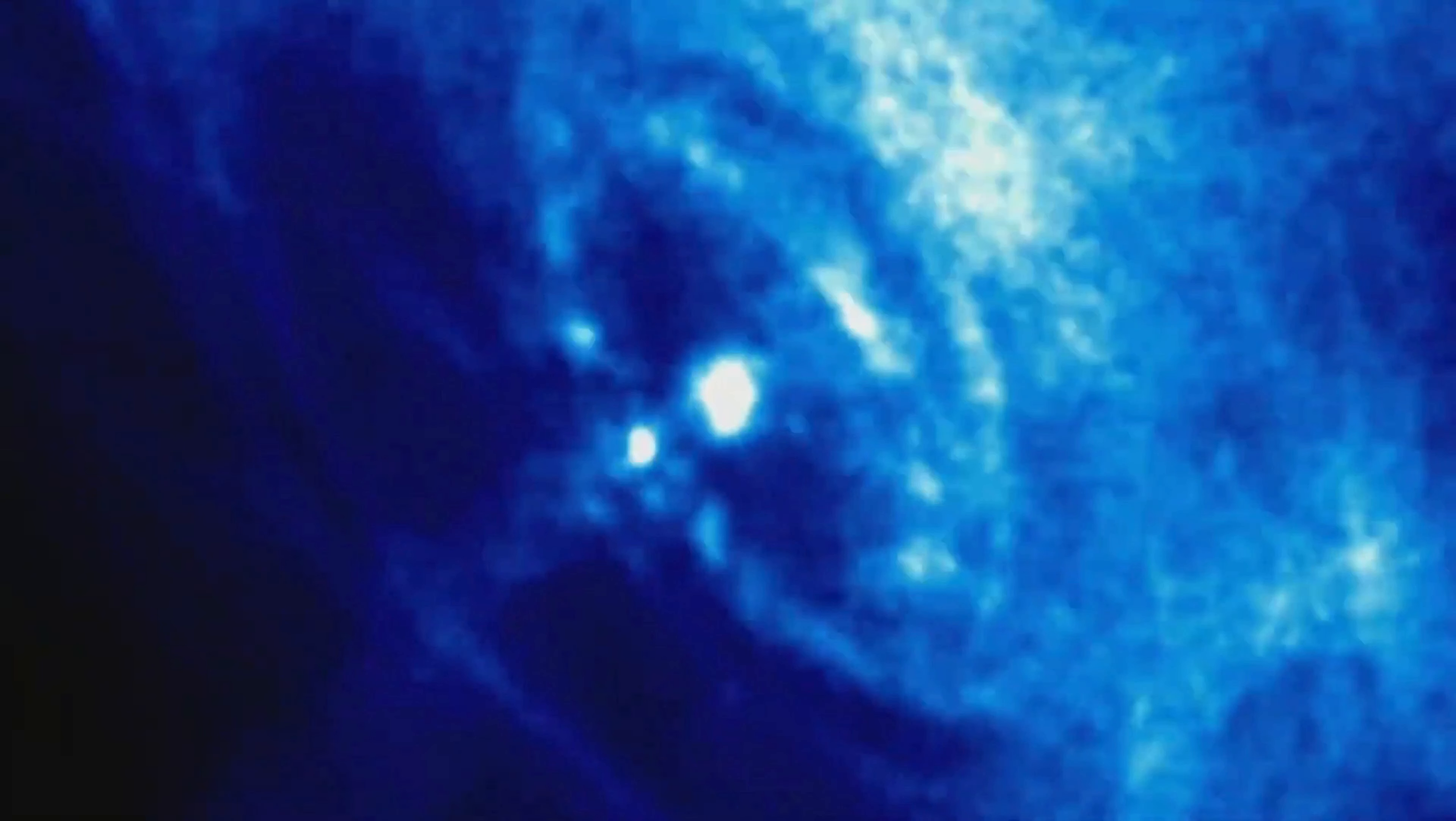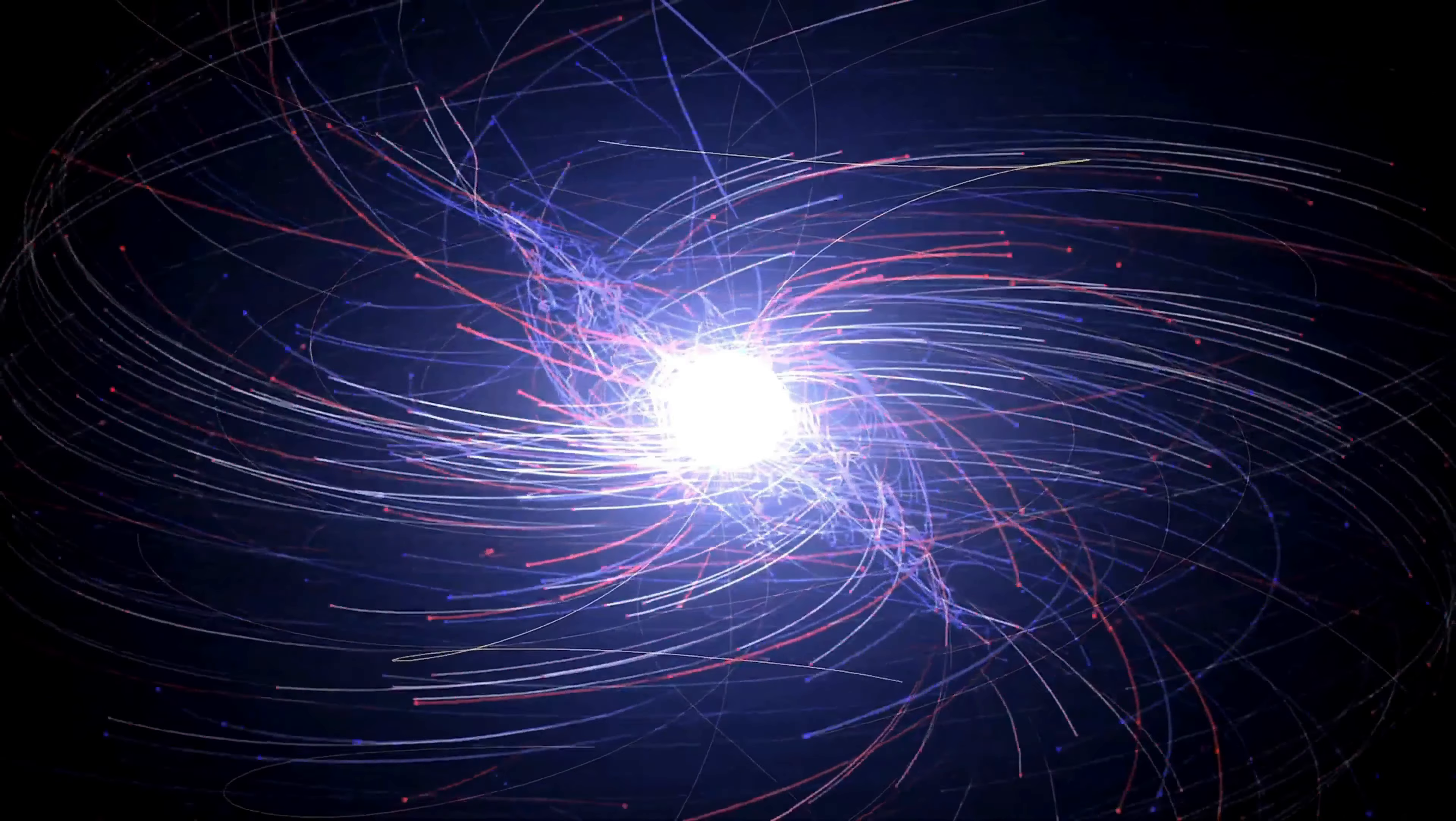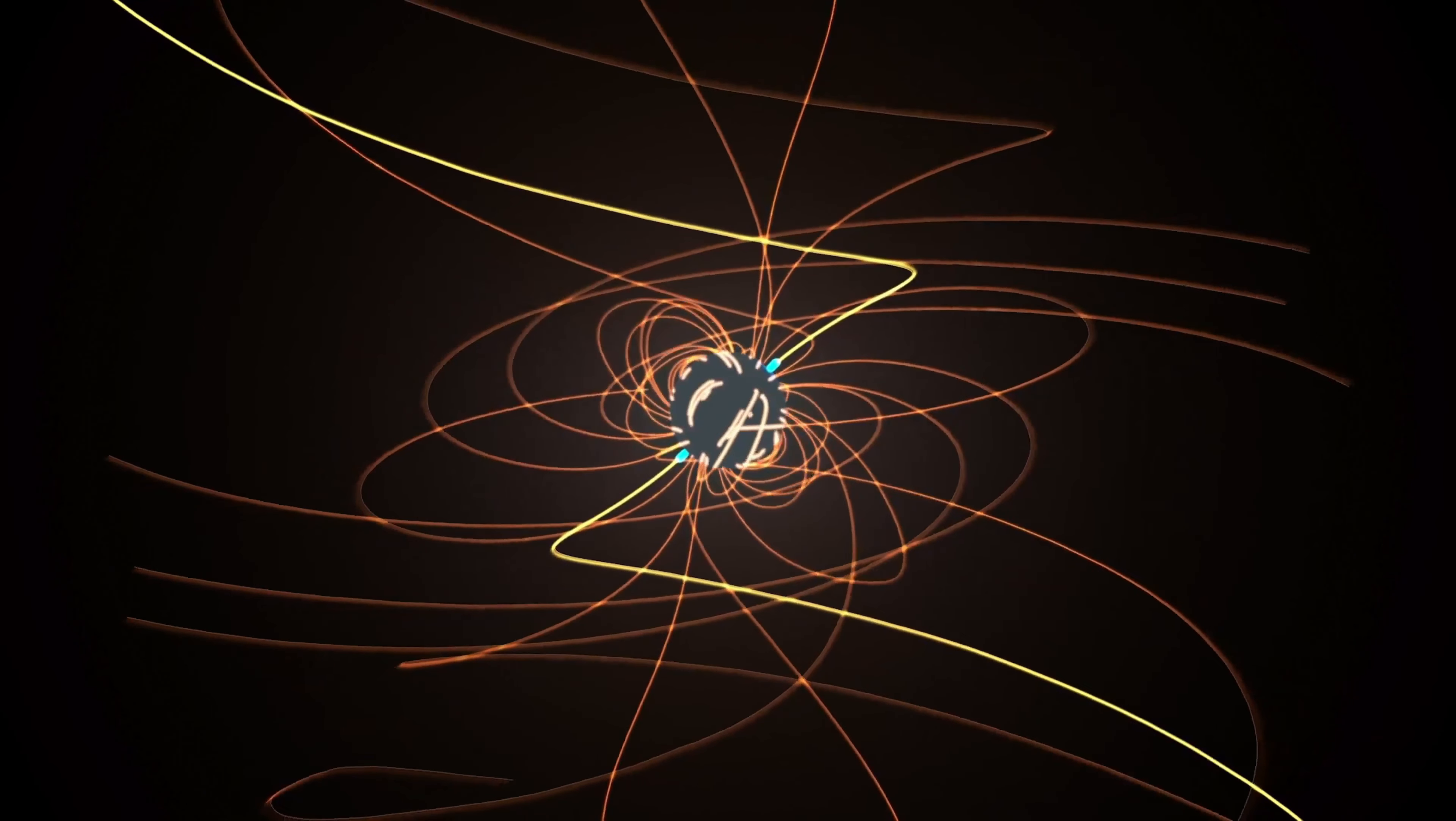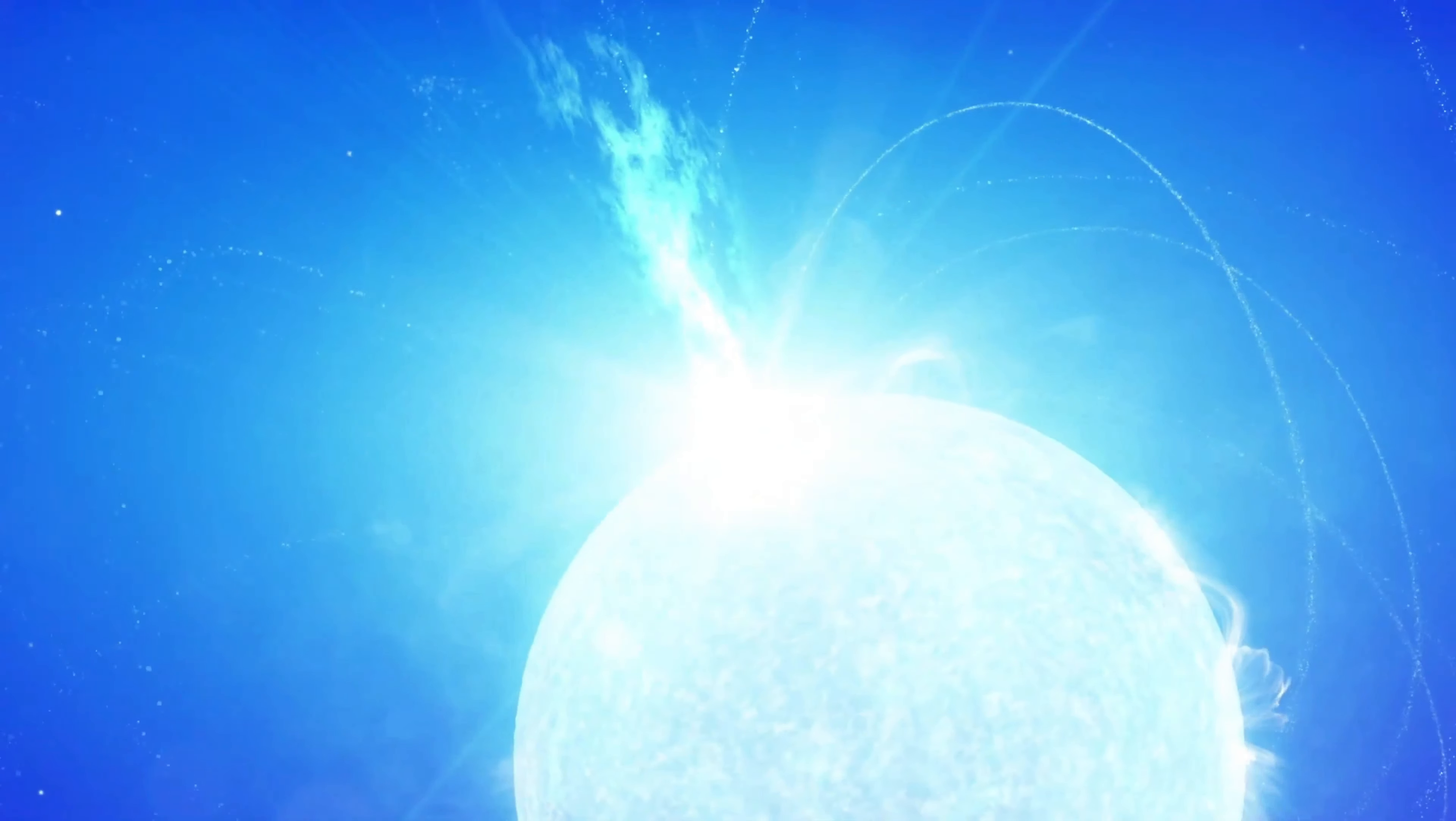PDS-70b orbits the orange dwarf star PDS-70 approximately 370 light-years from Earth in the constellation Centaurus. Though over 4,000 exoplanets have been cataloged so far, only about 15 have been directly imaged to date by telescopes.